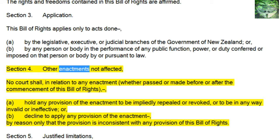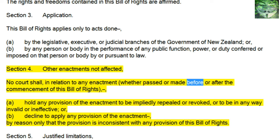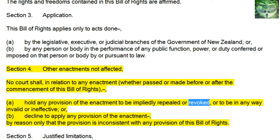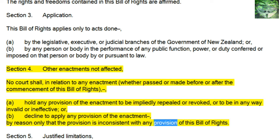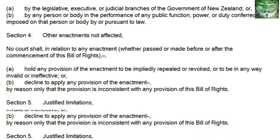Section 4, Other Enactments Not Affected: no court shall, in relation to any enactment, whether passed or made before or after the commencement of this Bill of Rights, a. hold any provision of the enactment to be impliedly repealed or revoked, or to be in any way invalid or ineffective, or b. decline to apply any provision of the enactment, by reason only that the provision is inconsistent with any provision of this Bill of Rights.